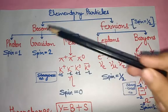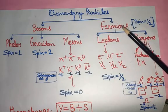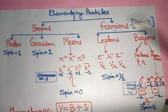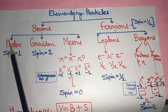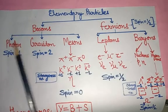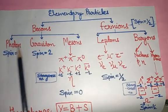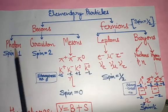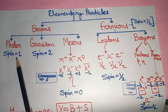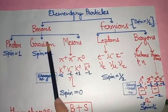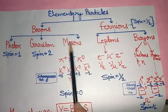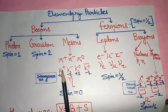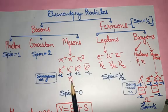Initially we are going to divide the elementary particles into two categories: bosons and fermions. In bosons we have photon, graviton, and mesons. The spin of photon is 1, graviton spin is 2, and mesons spin is 0 — all mesons have spin 0.